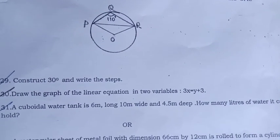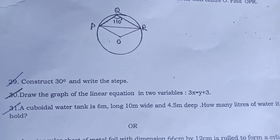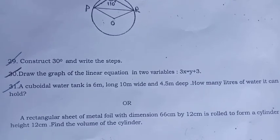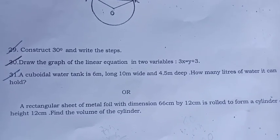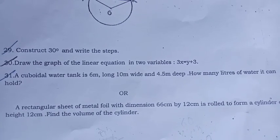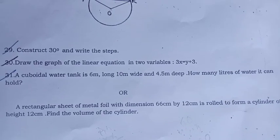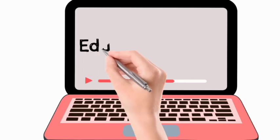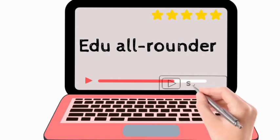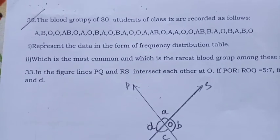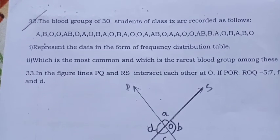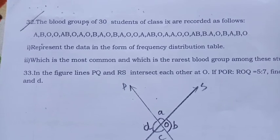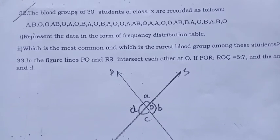Construct 30 degree and write the steps. Draw the graph of the linear equation in two variables 3x equal to y plus 3. A cuboid water tank is 6 meter long, 10 meter wide and 4.5 meter deep, how many liters of water it can hold. Or a rectangular sheet of metal foil with dimension 66 cm by 12 cm is rolled to form a cylinder of height 12 cm, find the volume of cylinder. The blood group of 30 students of class 9th are recorded as follows. A, B, O, like that they have given 30.